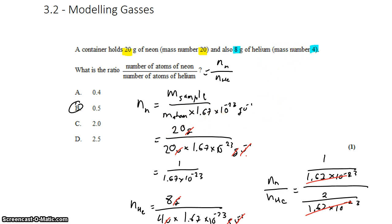So instead, if I wanted to find the number of neon atoms, the ratio of the number of neon atoms to the number of helium atoms, I could just take the mass of the sample of neon, 20, and divide it directly by the mass of the atom, 20.